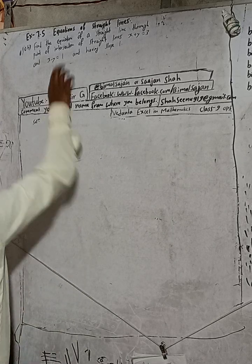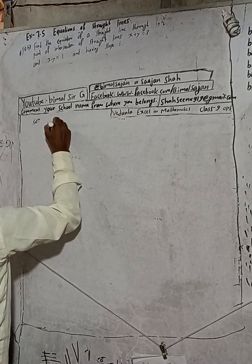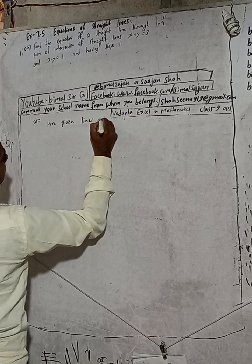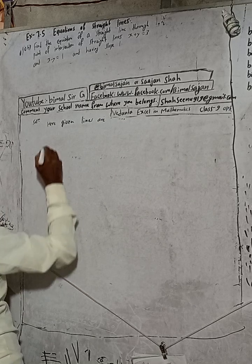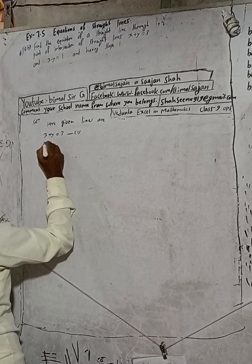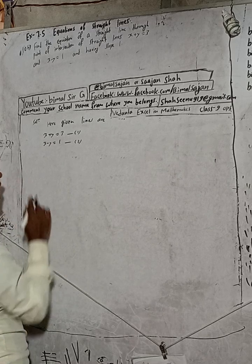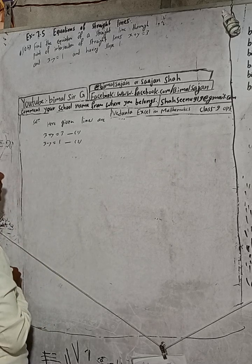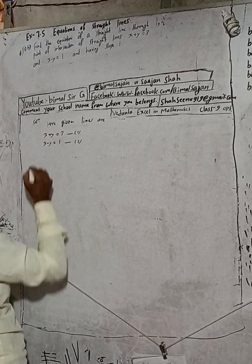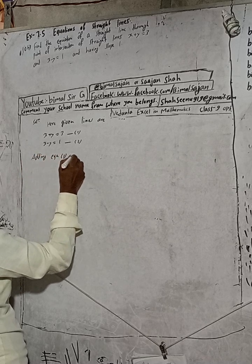First of all, we have to find the point of intersection of the lines given in the question. The first equation is x plus y equals 3, and the second equation is x minus y equals 1. To find the intersection point, we will solve these two equations simultaneously. If we add them, the y terms will cancel.